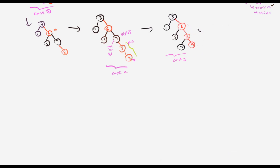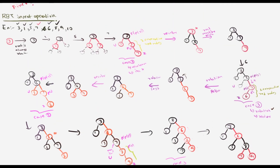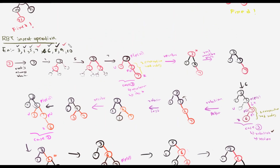The final outcome after inserting 9: the subtree has black 8, red 7 on the left and red 9 on the right. Black heights are the same and root is black, so we successfully inserted 9.